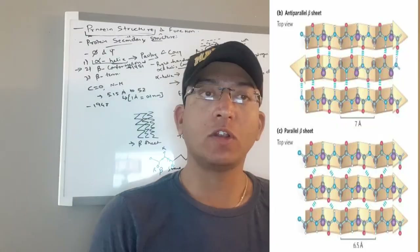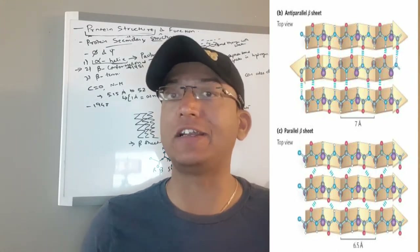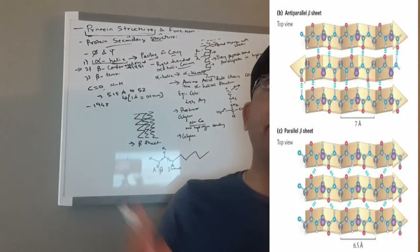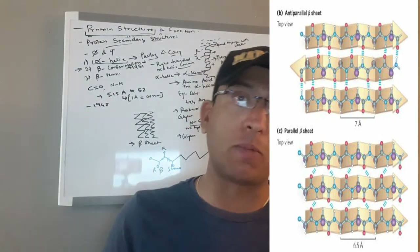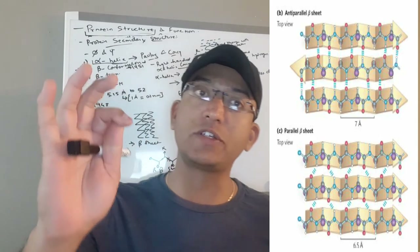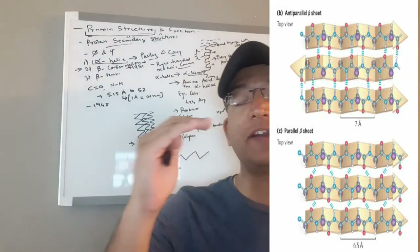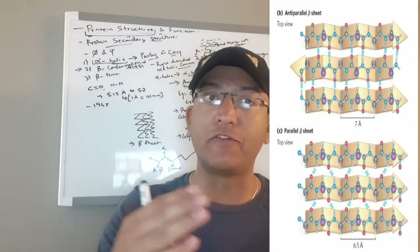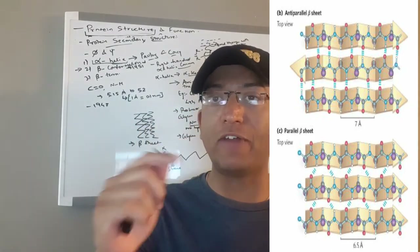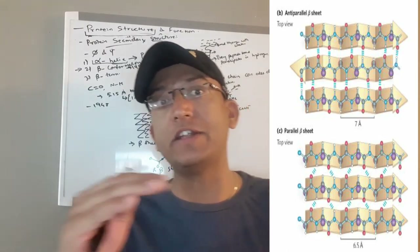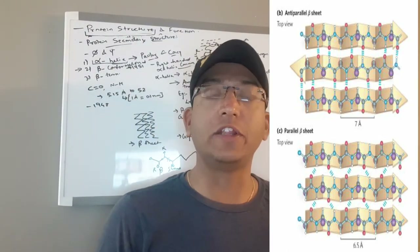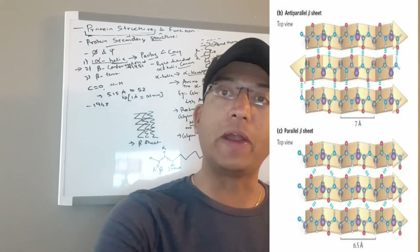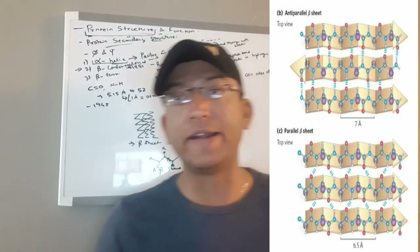Adjacent polypeptide chains in a beta sheet can be either parallel — with the same amino-to-carboxyl orientation — or antiparallel, with opposite orientation. The hydrogen bonding patterns differ: in antiparallel beta sheets, the interstrand hydrogen bonds are essentially in line, whereas in parallel beta sheets they are distorted and not in line, as shown in the pictures on screen.